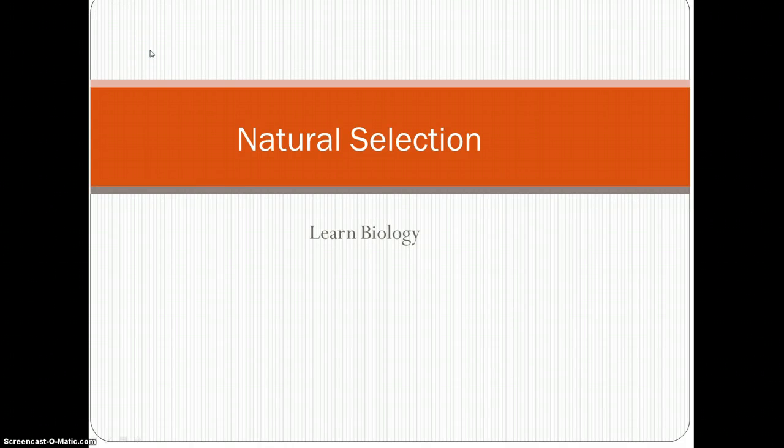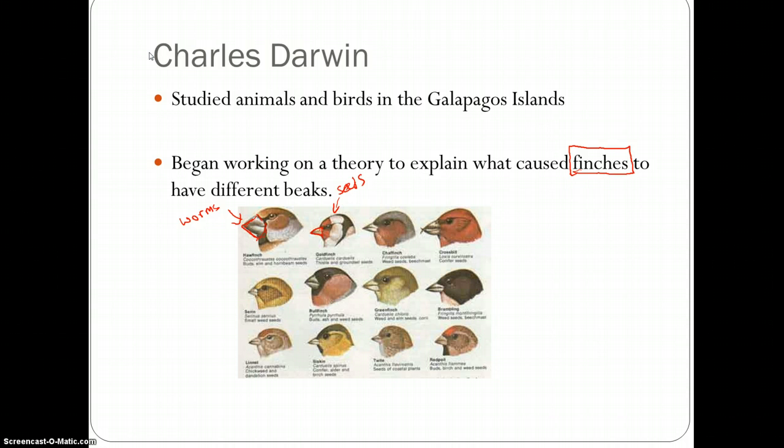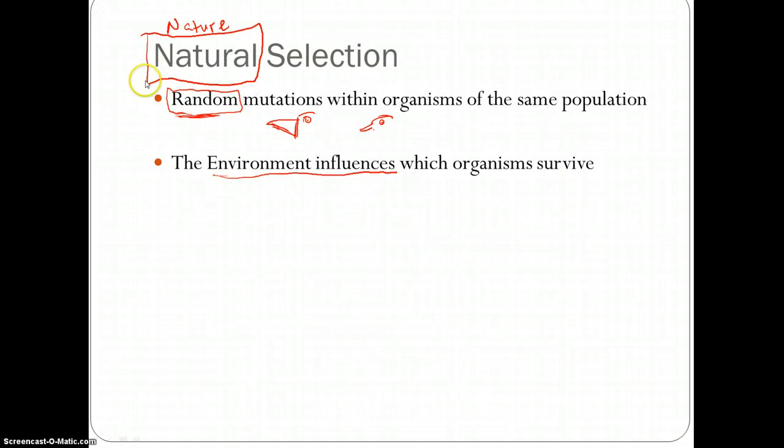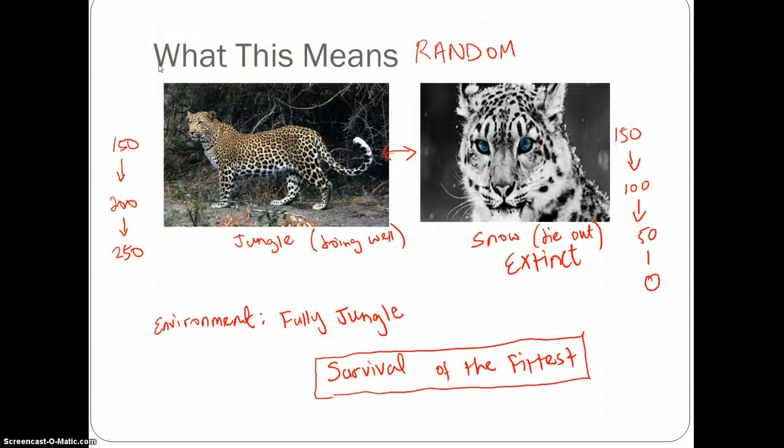Welcome to Learn Biology. In our last video we discussed natural selection and how it explains evolution. We went through Charles Darwin and how he studied the finches and discovered the different beaks and their usefulness in eating specific foods and how these variations increase the chances of survival. We also explained how natural selection occurs with random mutations and then the environment influences which organisms survive, and we went through the term survival of the fittest.